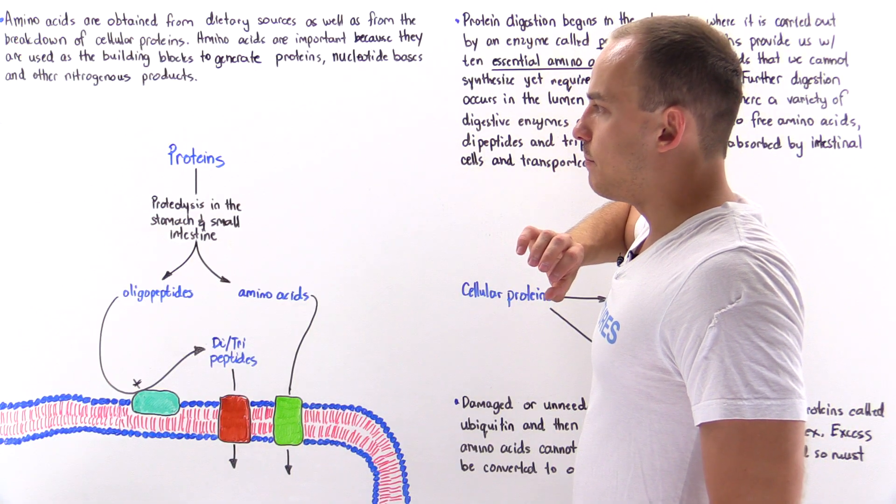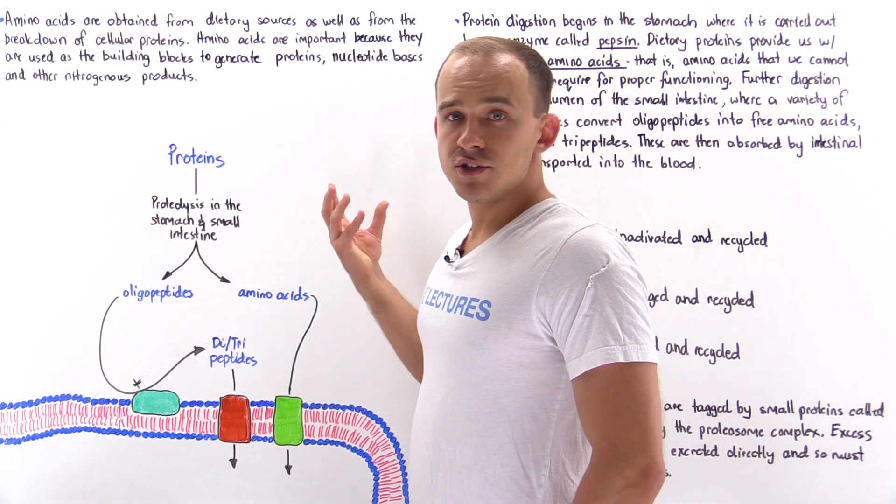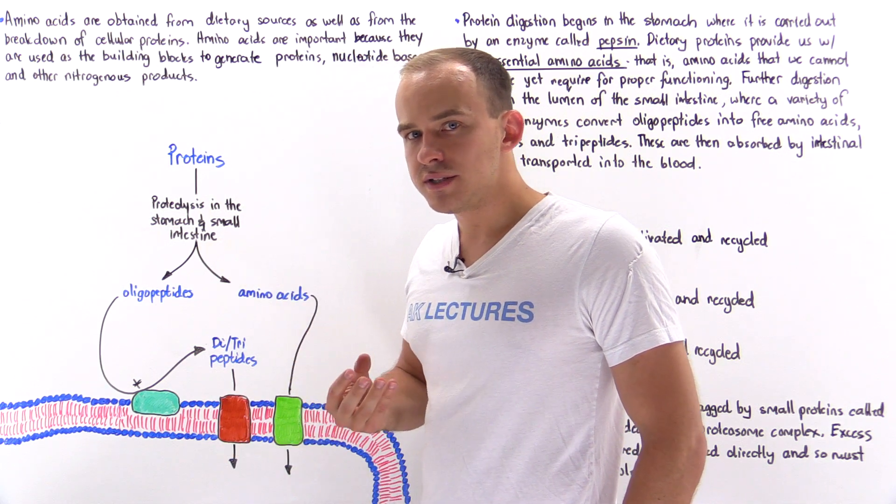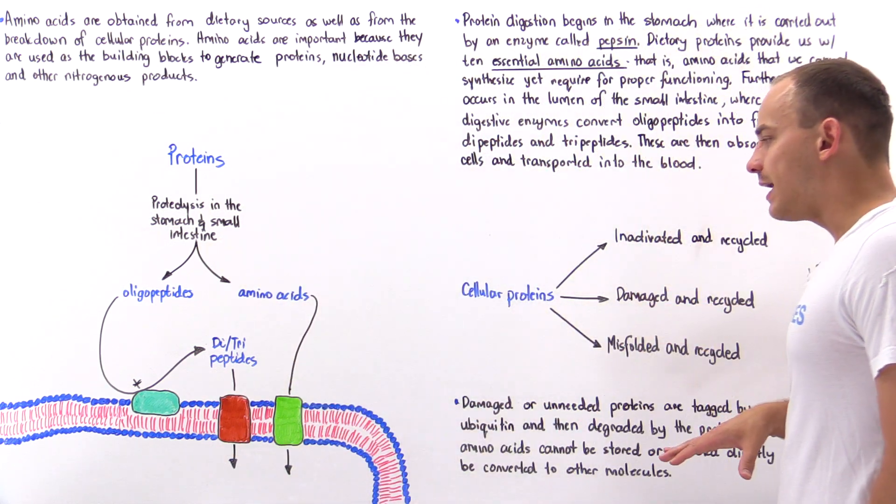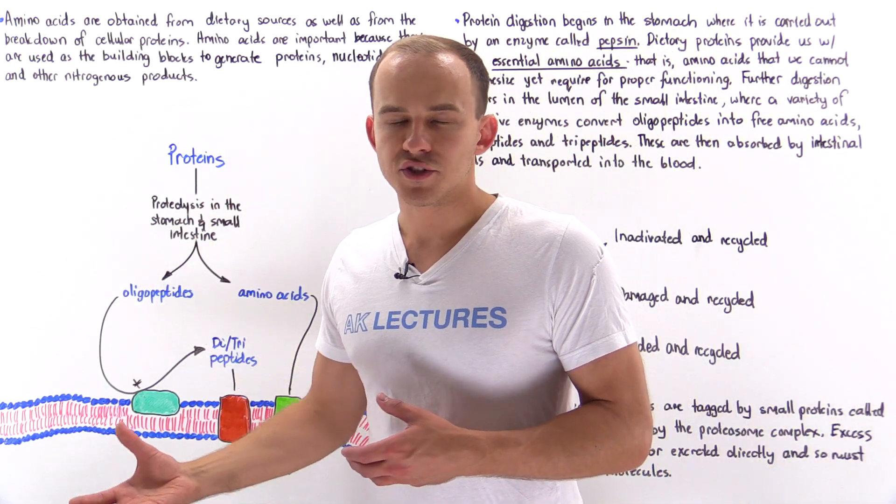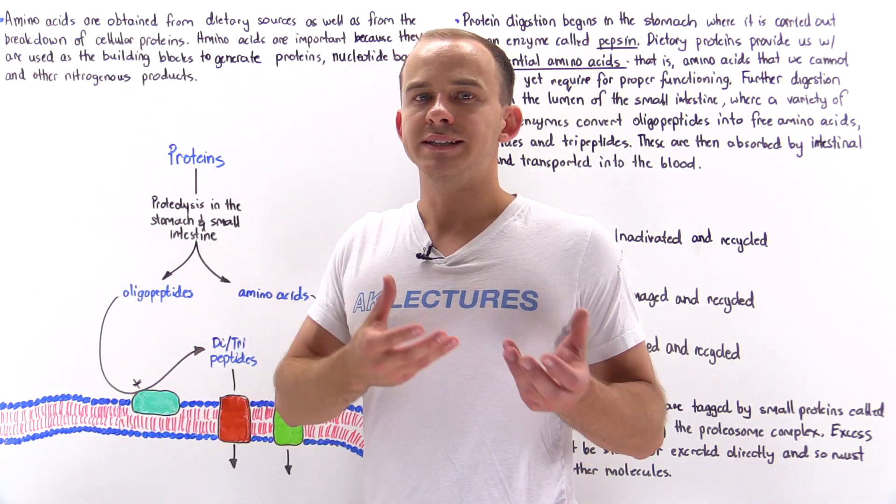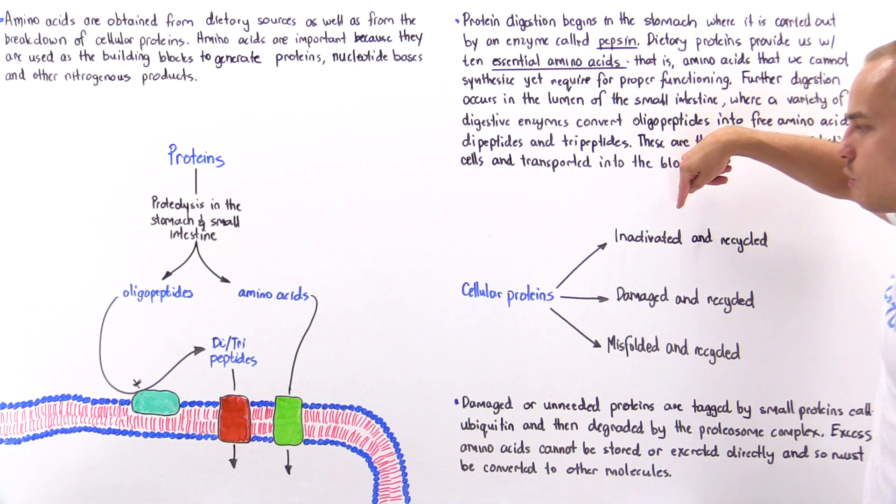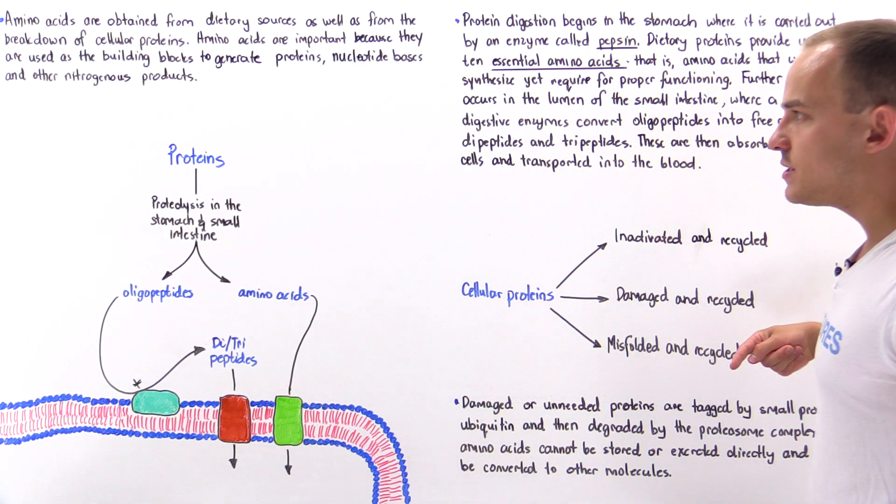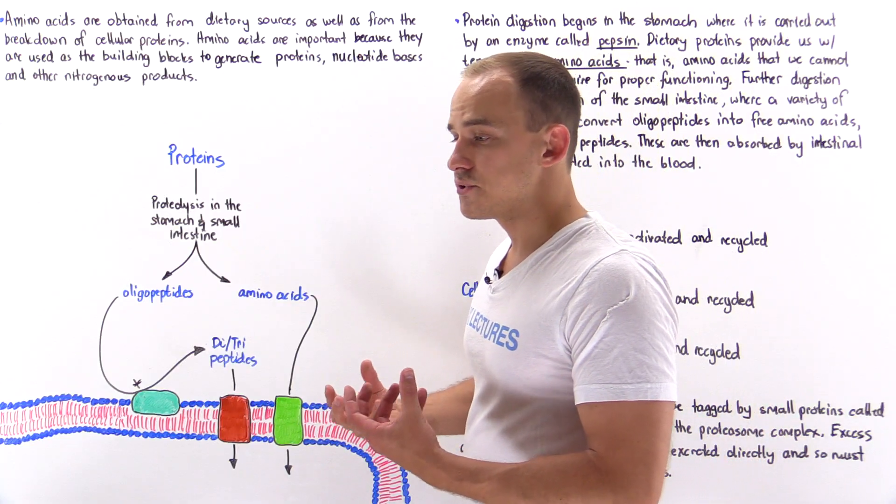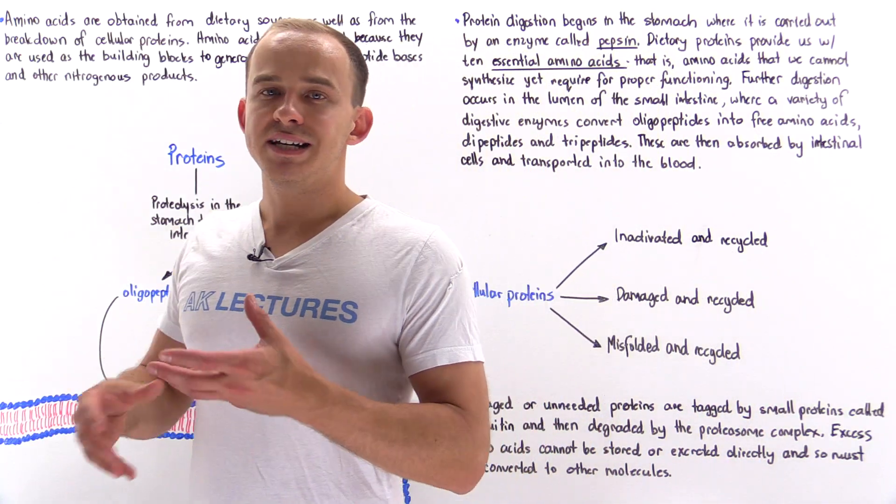The other pathway by which we obtain amino acids is by breaking down existing proteins found inside our body. We have proteins inside the cells as well as outside the cells, and these proteins can be broken down and recycled into amino acids. For example, we have many types of proteins that exist as enzymes, and these enzymes must be inactivated.